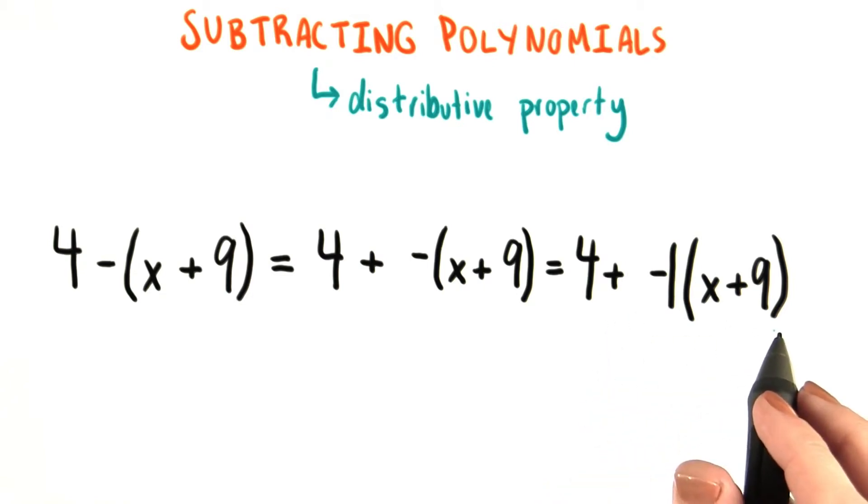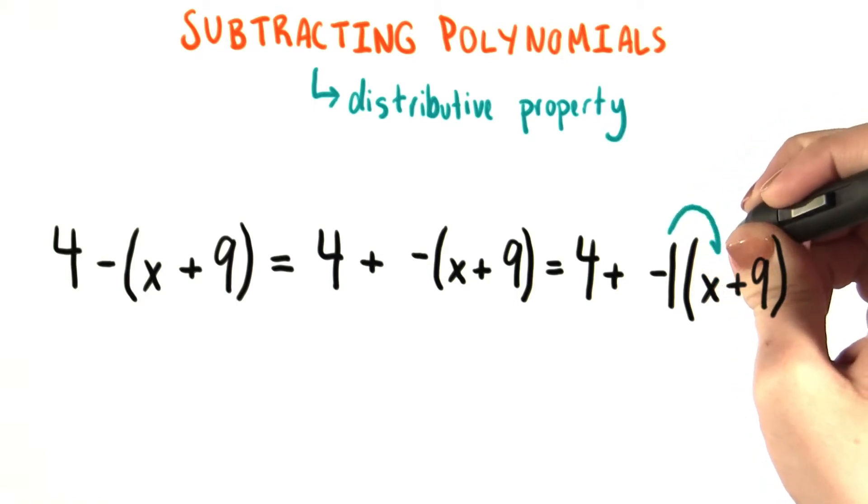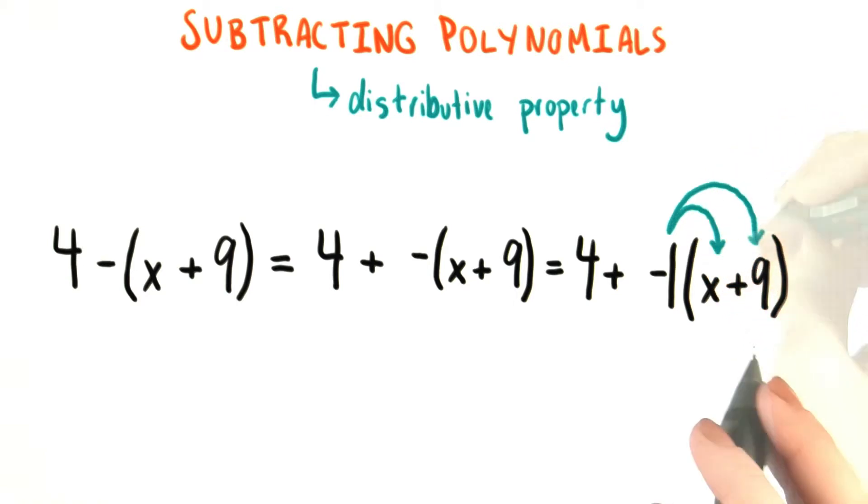So here, it's a bit easier to see explicitly why the distributive property is being applied in this case. We have a negative 1 that we're multiplying each term inside the parentheses by. So both x and 9 are each being multiplied by negative 1.